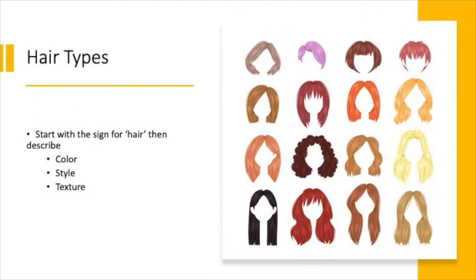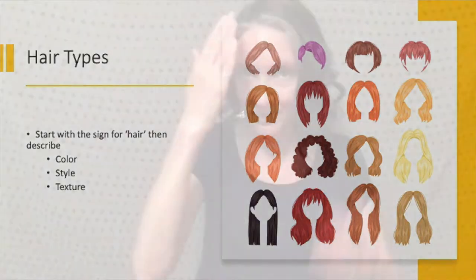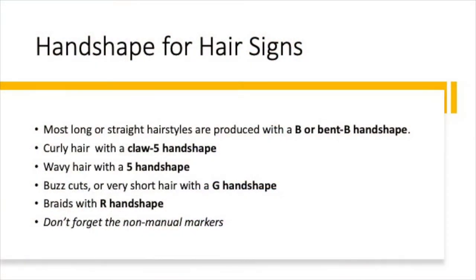Use DCLs to show hair type and style. Most long or straight hairstyles are produced with a B or bent B handshape. Curly hair is indicated with a claw 5, while wavy hair is often shown with a 5 handshape. Buzz cuts or very short hair is signed with a G handshape. Braids are shown with an R handshape. And as with other classifiers, don't forget your non-manual markers.